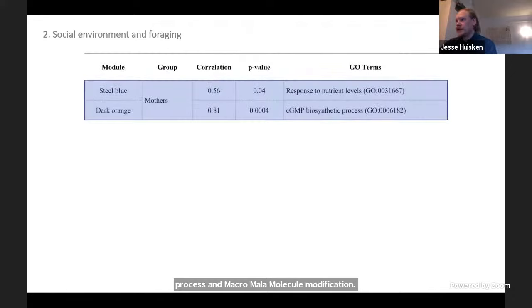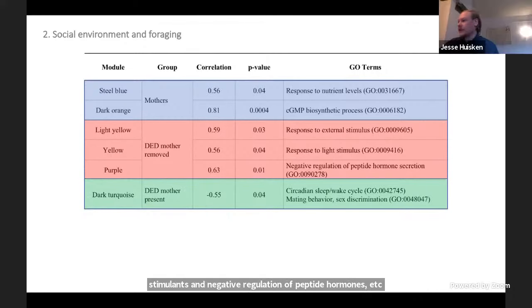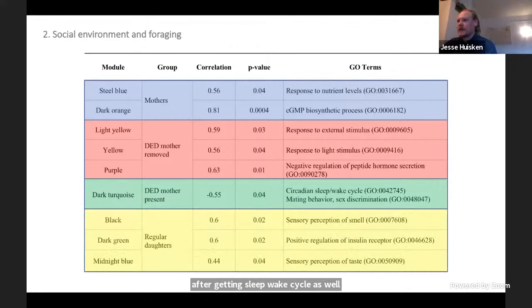Next, we performed a weighted gene co-expression network analysis to look at how genes were co-expressed in modules among our different groups. We found that among mothers, there were modules enriched for response to nutrient levels as well as cGMP biosynthetic process. DEDs with mother removed were enriched for response to external stimulus, response to light stimulus, and negative regulation of peptide hormones. DEDs with mother present were negatively associated with a module enriched for circadian sleep-wake cycle, as well as mating behavior and sex discrimination. Regular daughters were enriched for sensory perception of smell, positive regulation of insulin receptor, and sensory perception of taste.